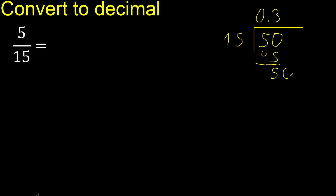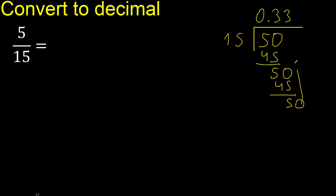There is no next number, so complete — always complete with 0. So 0 point. The point is here. 15 multiplied by 3 is 45, which is not greater. Subtract and complete: 0 point 3.